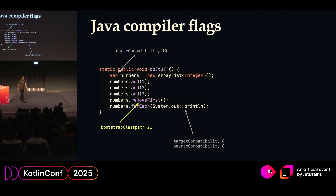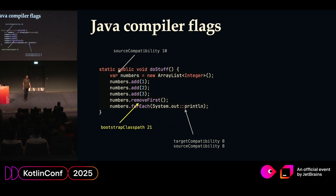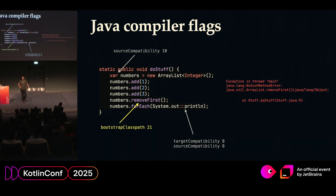The last important thing is there is a call here to removeFirst, which is an API from the Java standard library. Like Kotlin, Java has a standard library. Unlike Kotlin, it is bundled in the runtime. So if you use Java 21, you will have the Java 21 runtime. You need to configure your bootstrap classpath to make sure that your API calls are valid and that the compiler checks you are calling into the correct Java standard library. If you don't do this, it will compile fine, but when you execute your code you will see runtime errors, including a NoSuchMethodError exception.